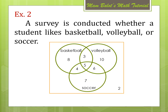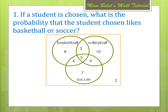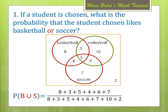Let's go back to example number 2, the survey of students who like different sports. Question number 1: if a student is chosen, what is the probability that the student likes basketball or soccer? Since we use the word OR, we are referring to the union of basketball and soccer. Computing P(B union S), the numerator includes all numbers inside the circles of basketball and soccer, divided by all numbers in the diagram. Adding it all up, we have 33 over 45, which can be reduced to 11 over 15.